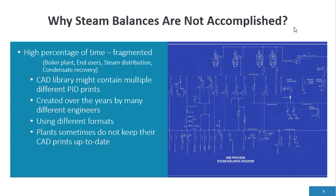Why are steam balances not accomplished? A high percentage of the time, it's fragmented. You have the boiler plant and utility operation sitting on one side, end users processing on their own management side, steam distribution whoever gets that doesn't want it, and the condensate recovery. By the way, you have condensate recovery. So it's very fragmented.